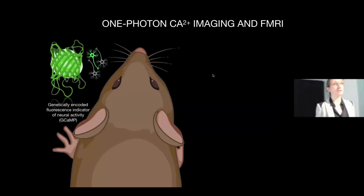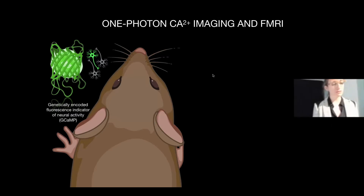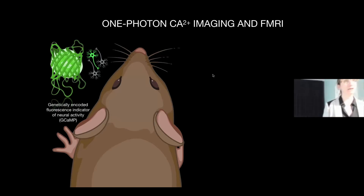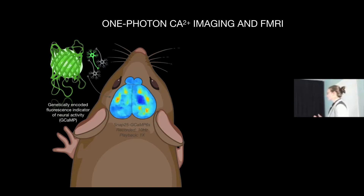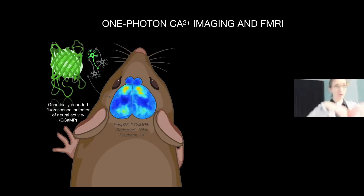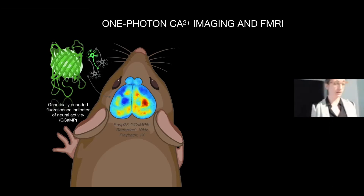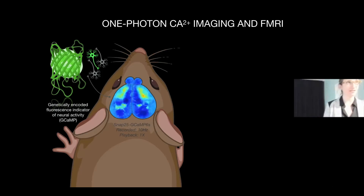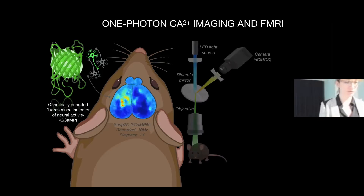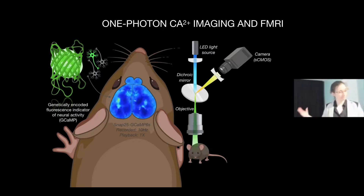Now a bit on the mesoscale imaging technology we use. We started with genetically encoded calcium indicators — GFP-based fluorescent signals of neuronal activity. This is what the data looks like on a good day: a SNAP-25 genetic indicator recorded at 10 Hz, played back in real time in an unanesthetized animal. You see blooms of neural activity in hot colors and decreases in cool colors, with nice bilateral activations. You also see artifacts — shadowing from blood vessels — but it's a nice signal to work with.